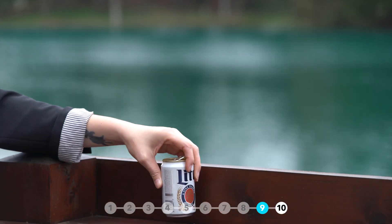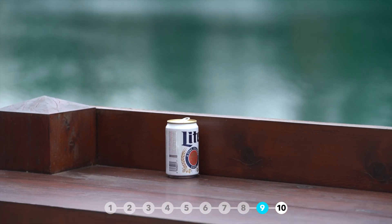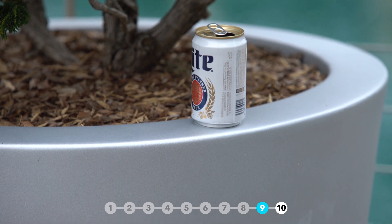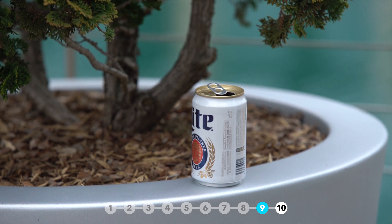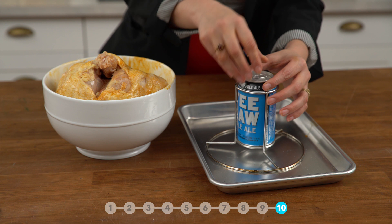Place half-empty beer cans around the perimeter of your party. Wasps and other flying insects will fly in and not be able to get out. For extra juicy chicken,